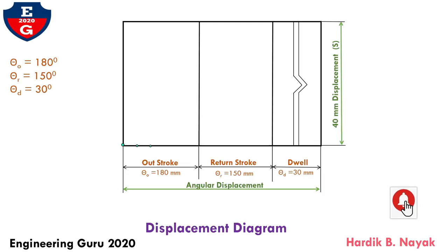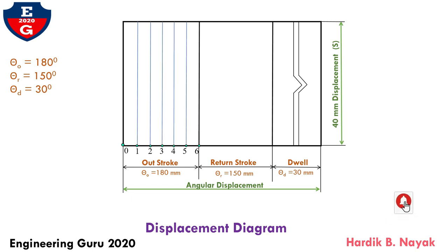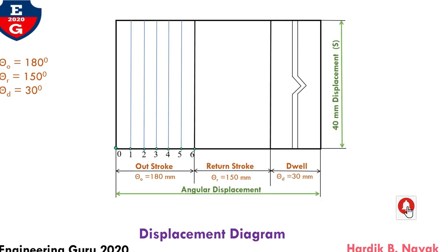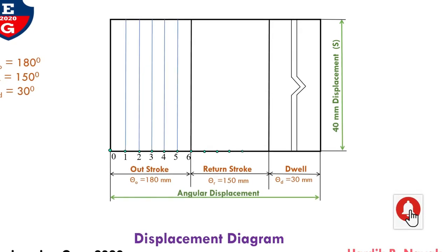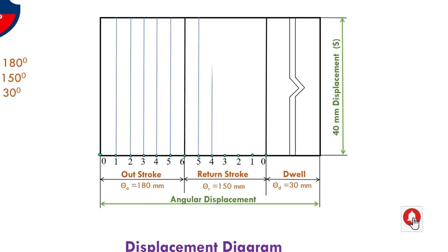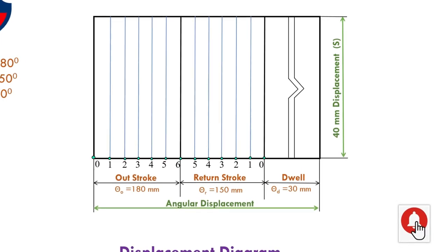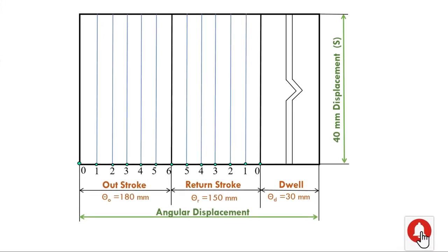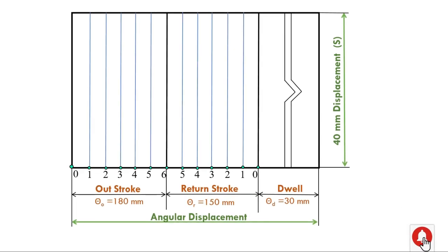I will be dividing this outstroke into 6 equal parts, draw projected vertical lines through all points, and give notation 0, 1, 2, 3, 4, 5, and 6. After the outstroke, there is the return stroke of 150 degrees. Again, divide this return stroke into 6 equal parts and draw projected vertical lines through all points, keeping the same notation in reverse order: 5, 4, 3, 2, 1, and 0.